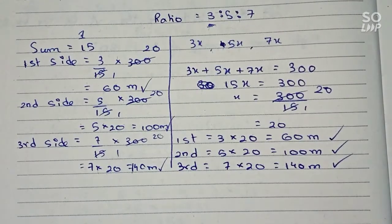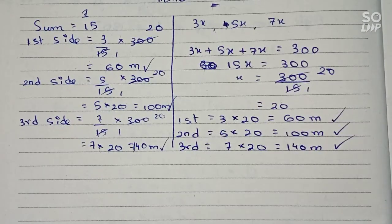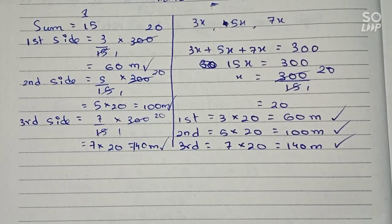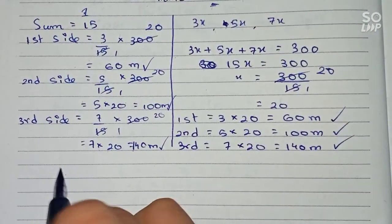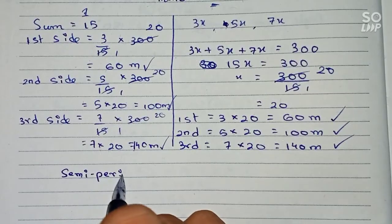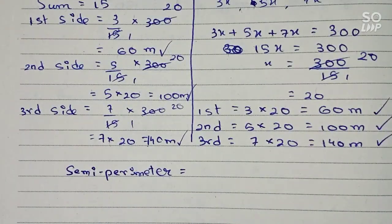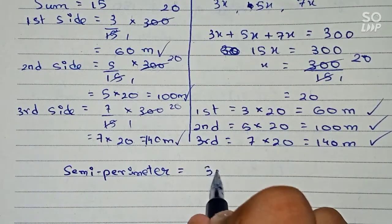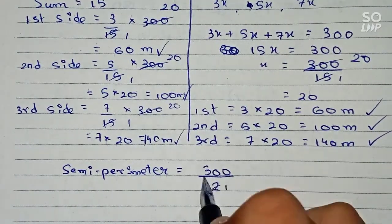So from both processes we get the three sides of the triangle: 60 m, 100 m, and 140 m. Now we can find the area. For the area we need the semi-perimeter. The semi-perimeter is perimeter divided by 2. The perimeter is already given as 300, so 300 divided by 2 equals 150 meters.